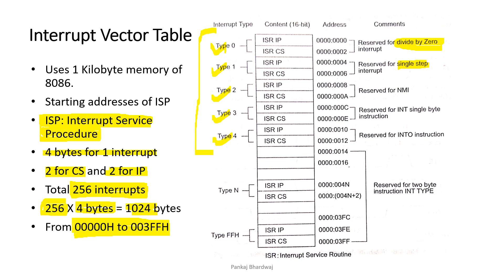Type 2 is for the NMI — non-maskable interrupt. When the NMI signal transitions from low to high, the same interrupt process is followed: flags are pushed onto the stack, the trap and interrupt flags are reset, and the CS and IP value of the next instruction of the main program are pushed onto the stack. Then the CS and IP of the interrupt service routine are loaded and the process of the interrupt is exactly followed.